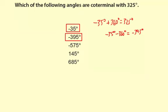And this 145, well let's see, 325 minus 145, that's 180. So that's not coterminal.